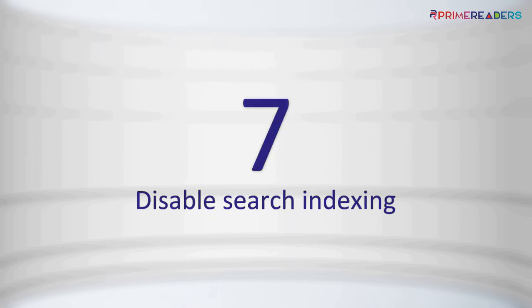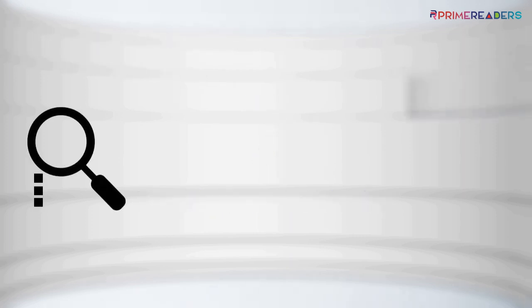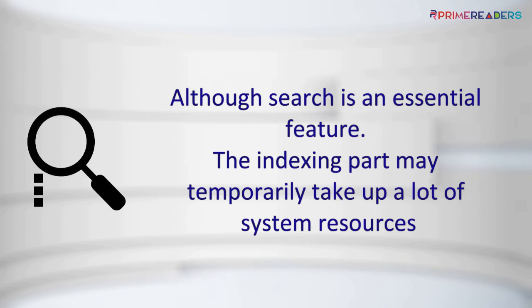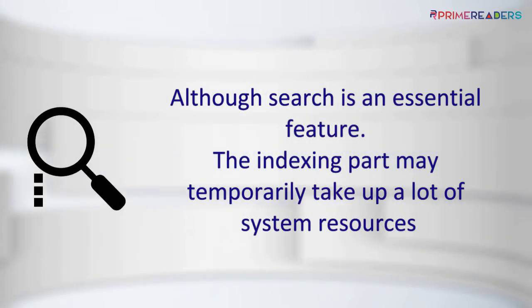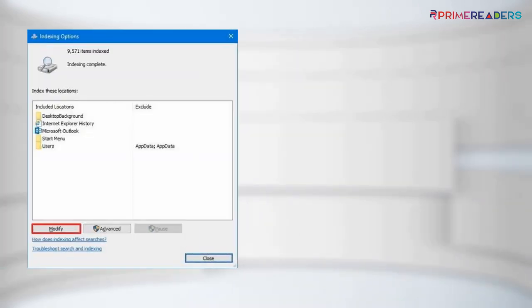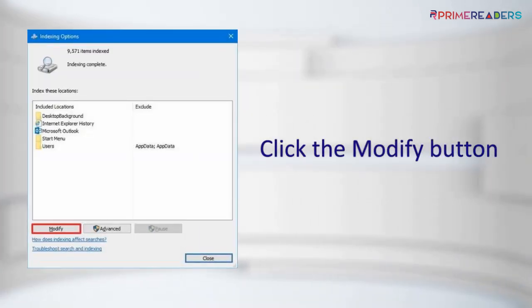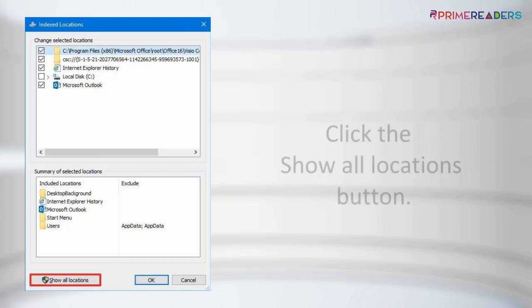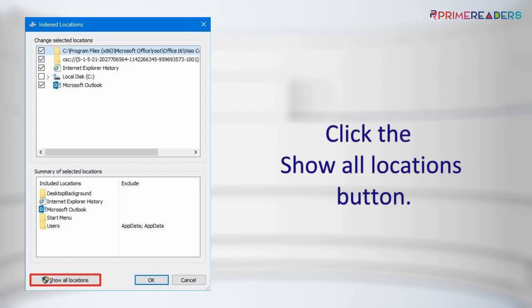Disable Search Indexing. Although Search is an essential feature on Windows 10, the indexing part may temporarily take up a lot of system resources, which can be a performance problem on low-end devices. Open Start, search for Indexing Options, and click the top result to open it. Click the Modify button, then click the Show All Locations button.